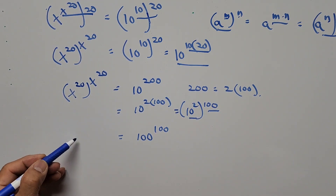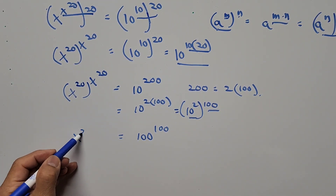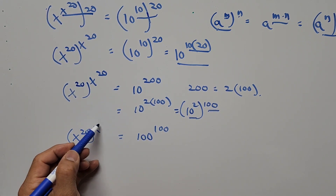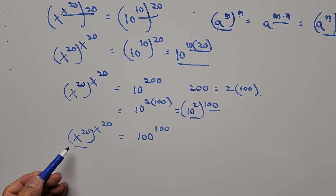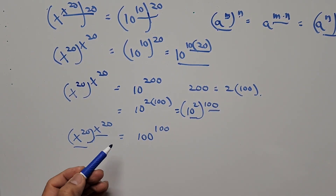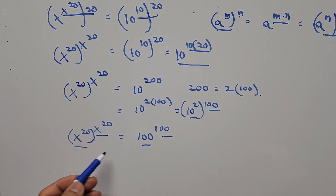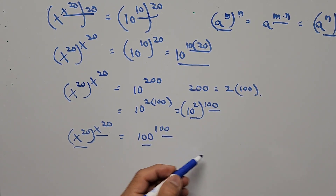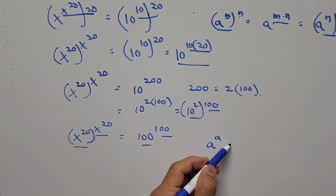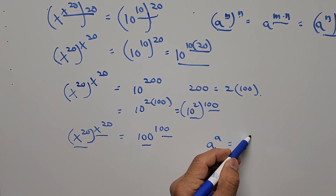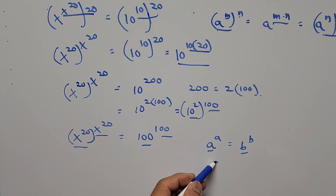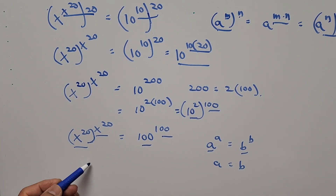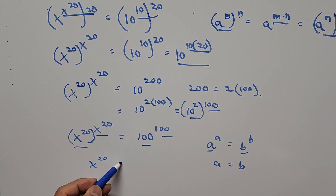The left-hand side remains x to the power of 20, raised to the power of x to the power of 20. Now the base is exactly the same as its exponent — likewise on the right-hand side. Based on the rule: if a to the power of a equals b to the power of b, then by comparison a equals b.